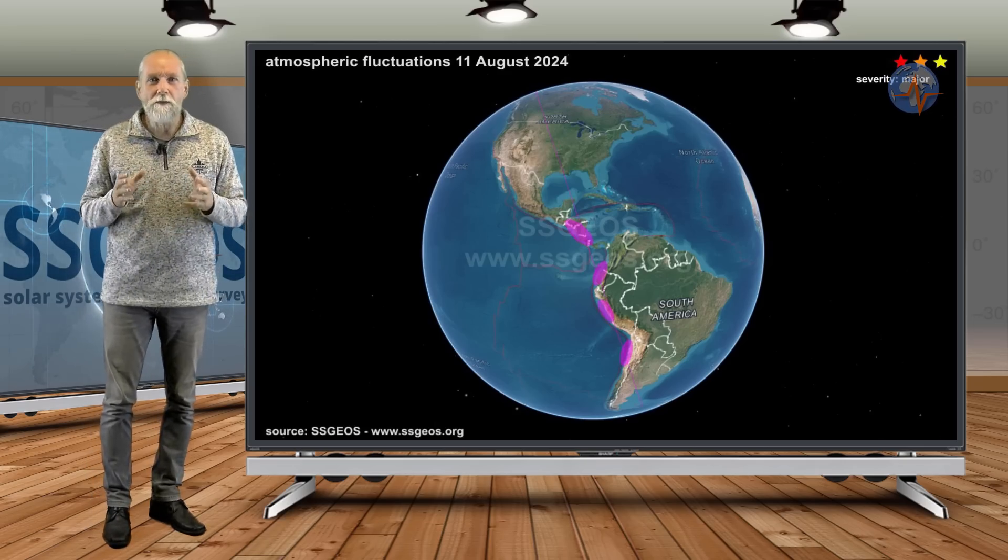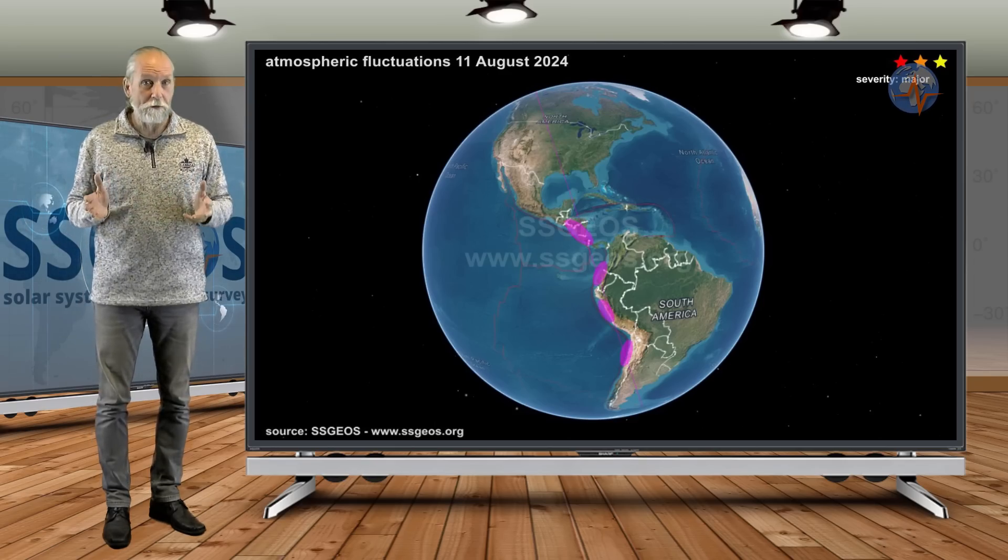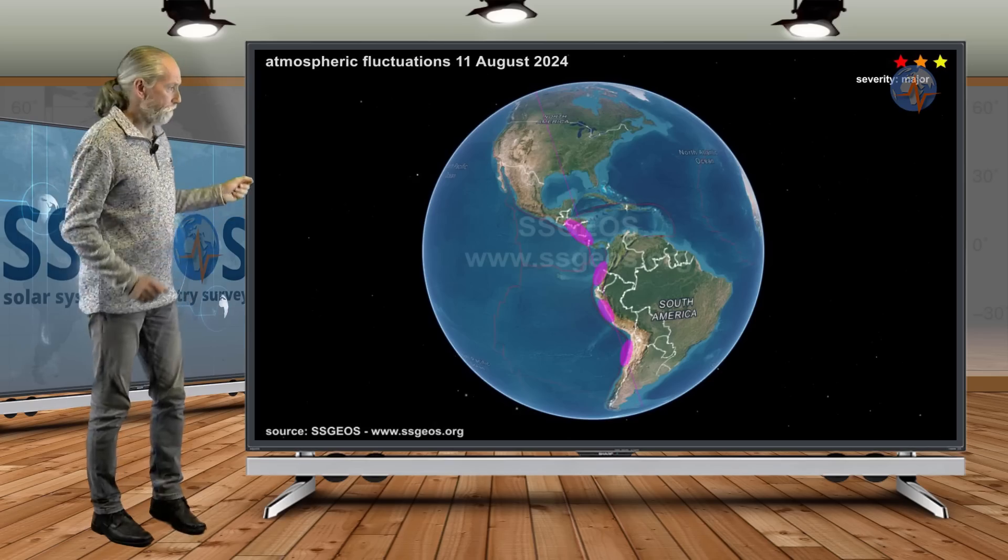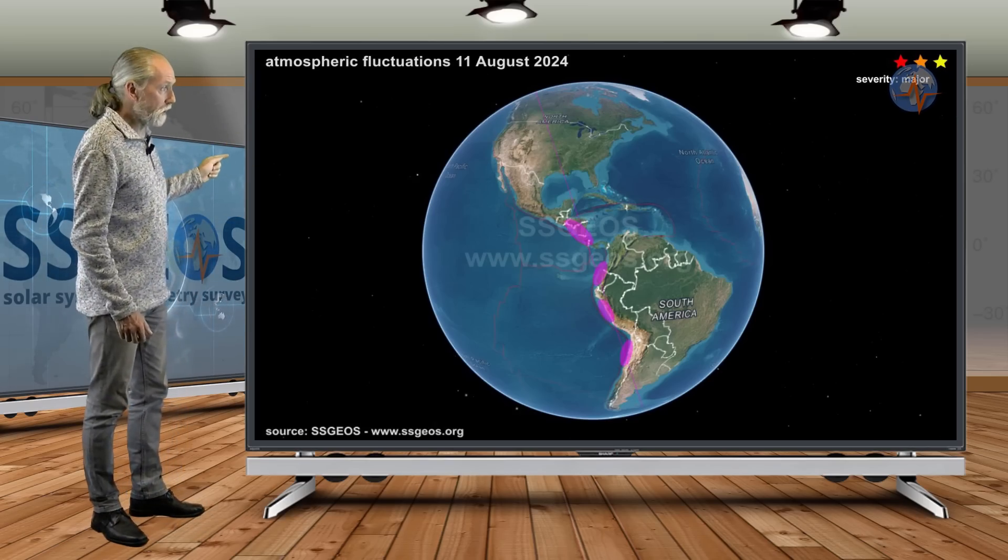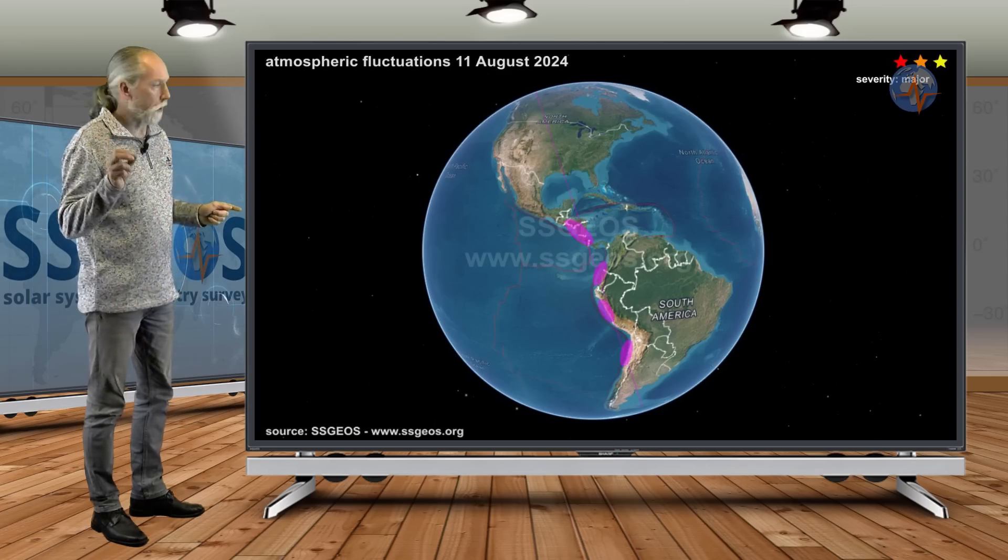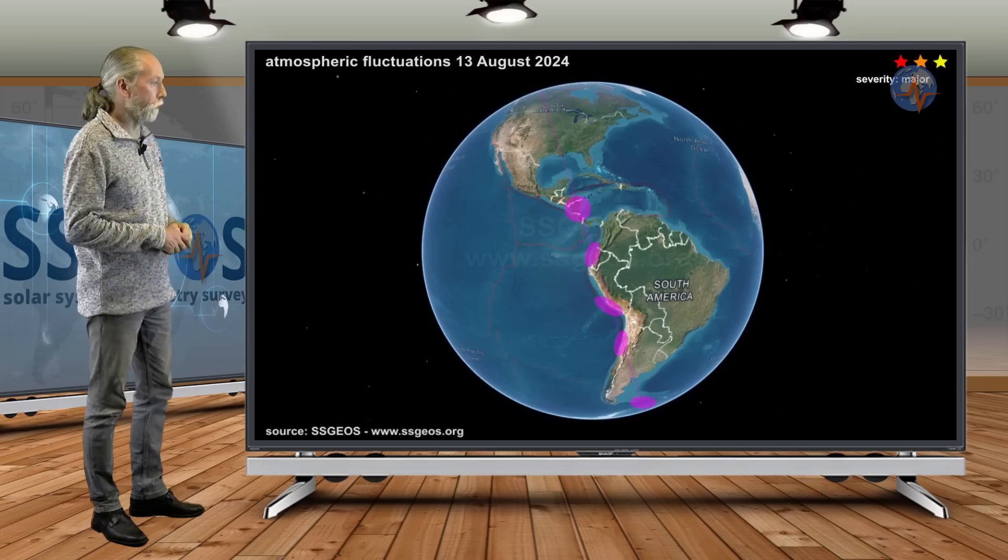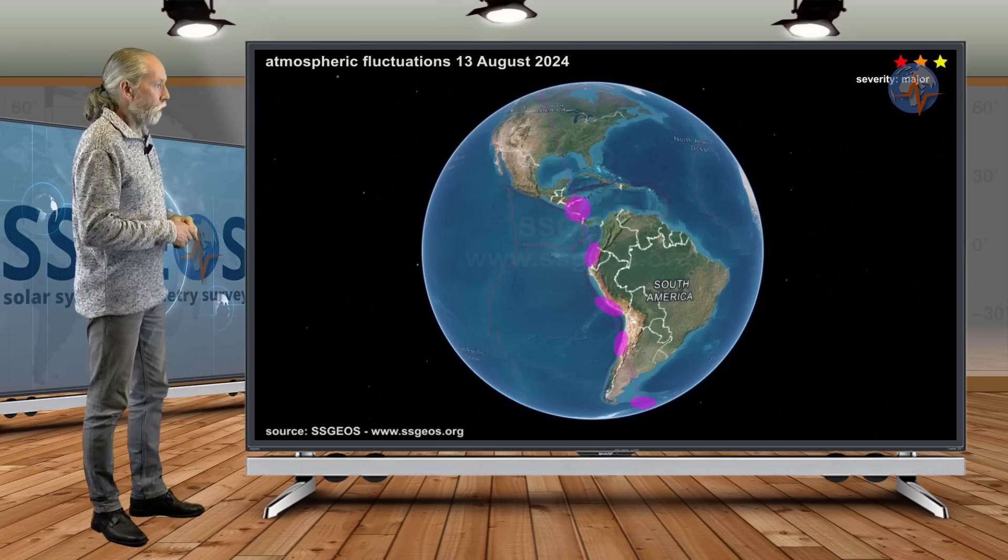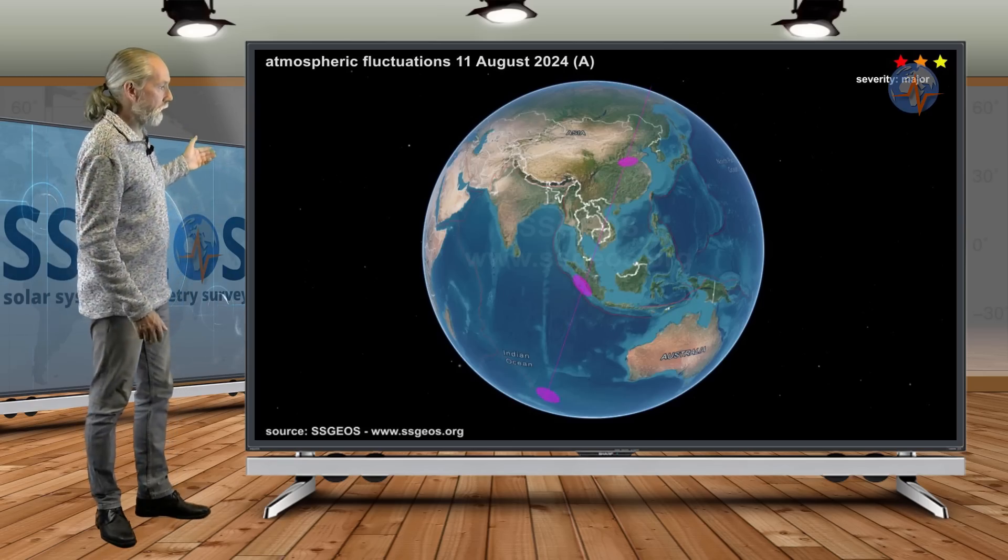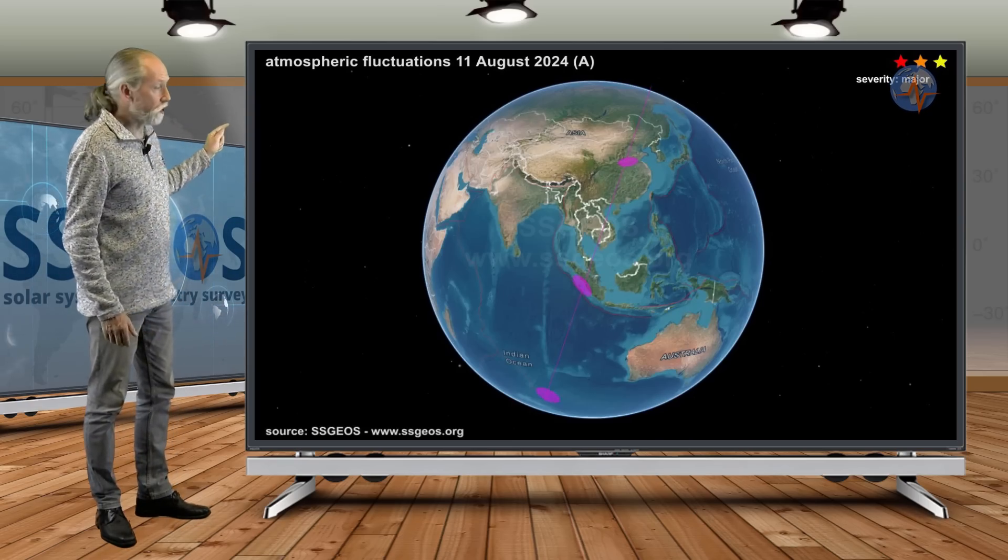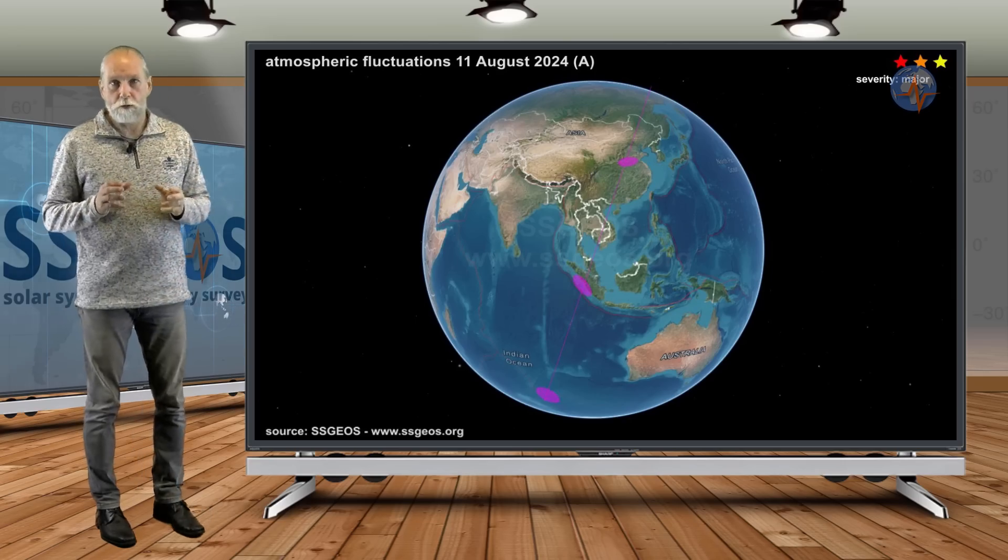We have some very significant atmospheric fluctuations that were recorded on the 11th and on the 13th. That may be an indicator of where large seismic activity can occur. It's not a guarantee, it's an estimate. So we have Central South America in particular. I'd say Chile, Peru, Ecuador, be on extra alert. We had fluctuations there on the 11th but also on the 13th. And we also